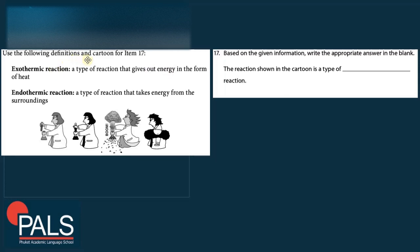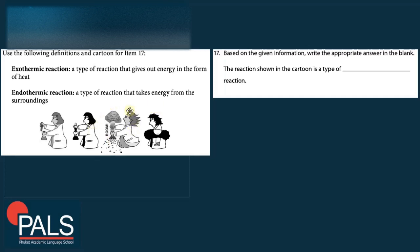Questions 17 and 18 use definitions: an exothermic reaction gives out energy as heat; an endothermic reaction takes in energy from surroundings. A cartoon shows a chemist mixing two chemicals, causing an explosion with a ring of smoke. An explosion is clearly a release of energy — giving out energy in the form of heat. The reaction shown is therefore an exothermic reaction.